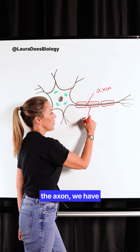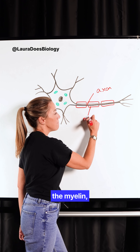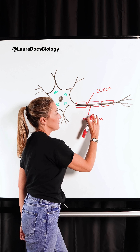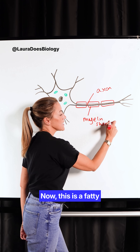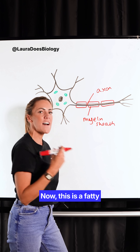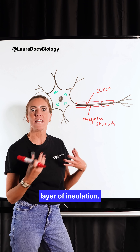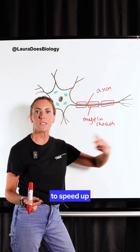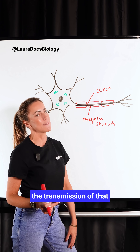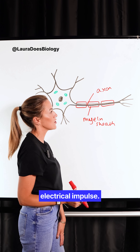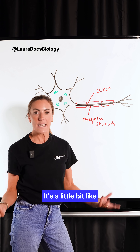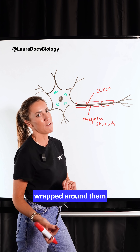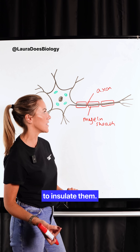Now, surrounding the axon, we have the myelin sheath. This is a fatty layer of insulation. It's going to insulate the axon and speed up the transmission of that electrical impulse. It's a little bit like how wires in your home have plastic wrapped around them to insulate them.